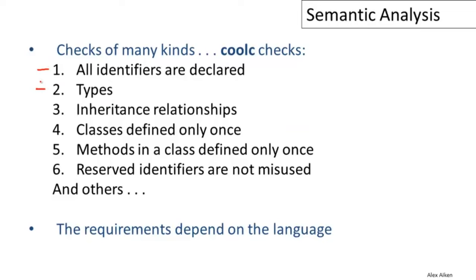There are a number of restrictions that come from the object-oriented nature of Cool. We have to check that inheritance relationships between classes make sense, that classes aren't redefined — we want only one class definition per class — and that methods are only defined once within a class. Cool also has reserved identifiers with special rules that must be followed, and this list is not even complete.